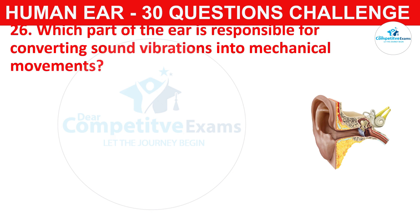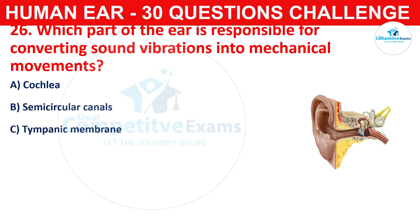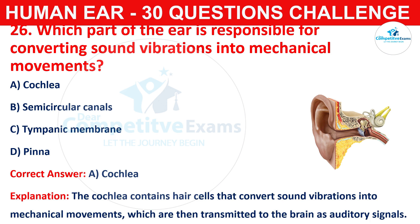Question number twenty-six: which part of the ear is responsible for converting sound vibrations into mechanical movements? Your options are cochlea, semicircular canals, tympanic membrane, or pinna. The correct answer is A, that is cochlea. The cochlea contains hair cells that convert sound vibrations into mechanical movements, which are then transmitted to the brain as auditory signals.